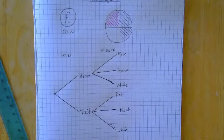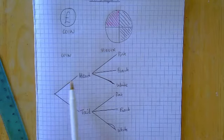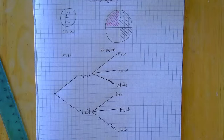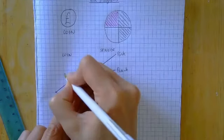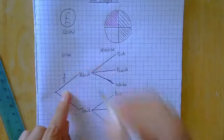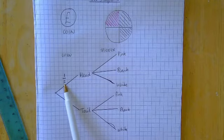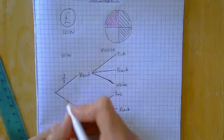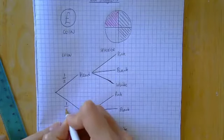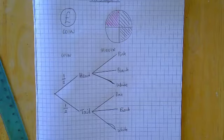Let's think about the coin — a perfectly fair, unbiased coin. The probability of getting a head is one half: there are two options and we want one of them. That's how we build probability — the number on the bottom is the number of options, and the number on the top is how many of them we want. The probability of a tail is also a half, and we write those probabilities on the branches.